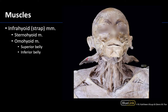The sternocleidomastoid muscles have been reflected in this particular dissection in order to see some of the deeper structures. We'll focus now on the strap muscles, or infrahyoid muscles. I always like to find the hyoid first, which is right in this region. We are looking at a more superficial dissection of the strap muscles — the superficial layer. You can see the large sternohyoid right here, extending from the sternum all the way to the hyoid, with a vein running over the top of it, which isn't uncommon at all.